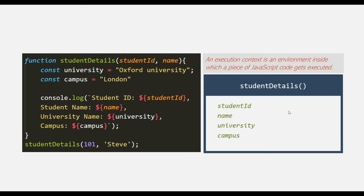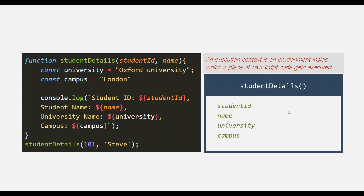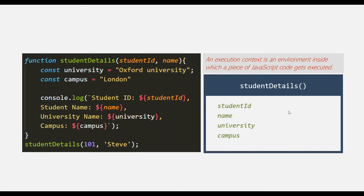We will learn more about ExecutionContext in great detail — how it is created and what it stores — in our next lecture. For now, you just need to remember that an ExecutionContext is like a container which stores all the necessary information in order to execute a piece of JavaScript code. And with this, let's now understand how a JavaScript program is executed by the JavaScript engine in the call stack.